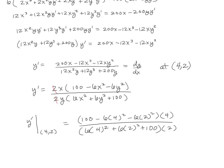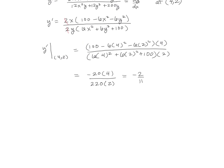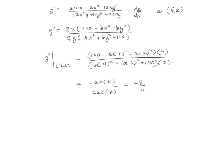And we can now go to a calculator. So this works out to be negative 20 times 4 divided by 220 times 2, which reduces down to negative 2 over 11, which is a nice little answer compared to how this could have been with all those large numbers.